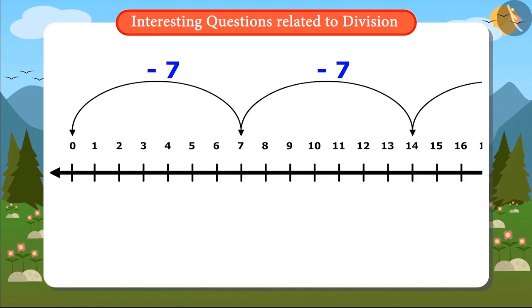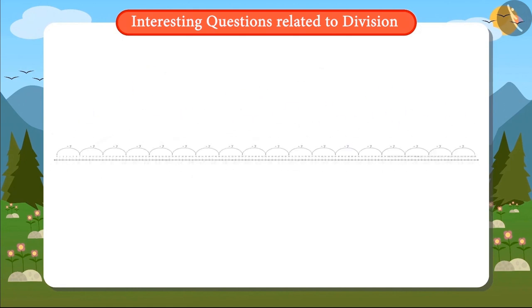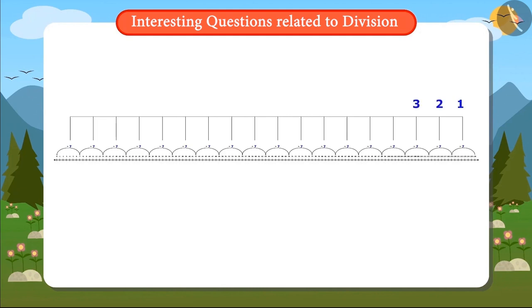Now I just want to see how many times 7 had to be reduced to reach 0. Vandana counts: 1, 2, 3, 4, 5, 6, 7, 8, 9, 10, 11, 12, 13, 14, 15, 16, 17, 18.